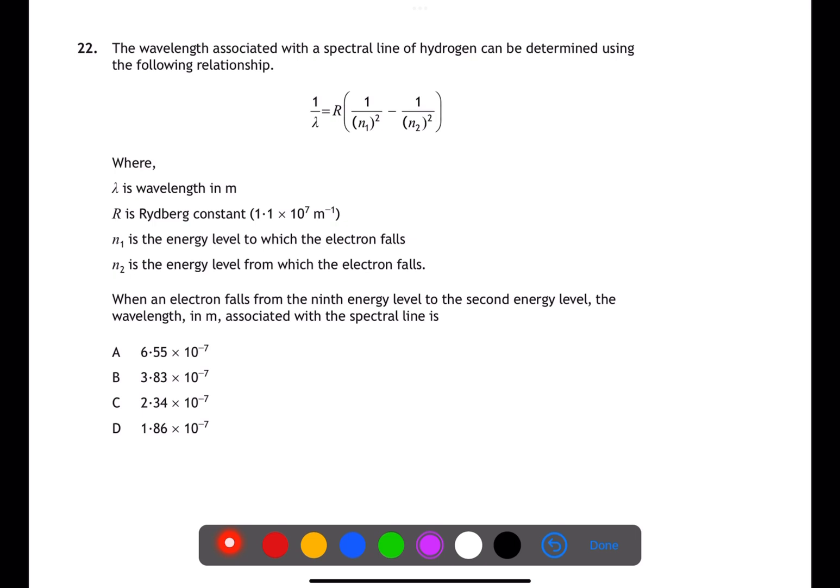For question 22, you need to use the information in the question to insert into the equation that is given. We put in the number for the Rydberg constant from the question. N1 is the level to which the electron falls, which is 2, and N2 is the level from which the electron is falling, which is 9. If we rearrange the equation for wavelength, then you get 3.83 times 10 to the minus 7, which is B.